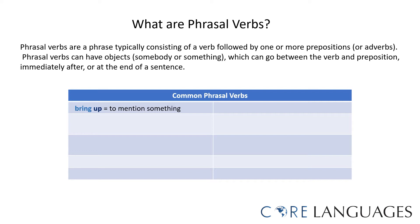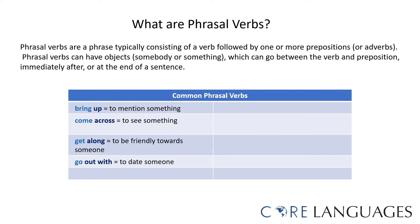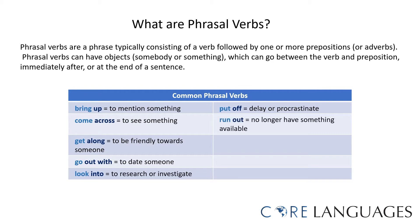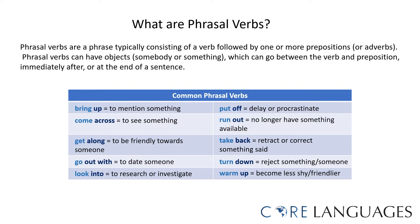To bring up — 'bring' is the verb and 'up' is the preposition — means to mention something. To come across means to see something. To get along means to be friendly towards someone. To go out with means to date someone or to be in a relationship. Look into means to research or investigate something. To put off means to delay or to procrastinate. To run out means to no longer have something available. To take back means to retract or correct something said. To turn down means to reject something or someone. And to warm up means to become less shy or to become friendlier.